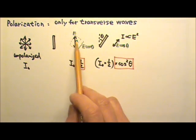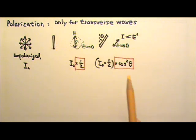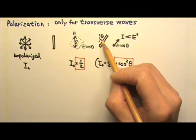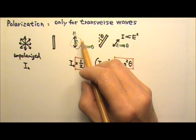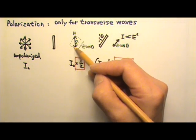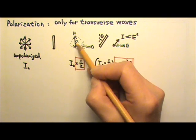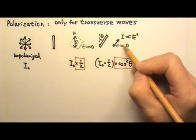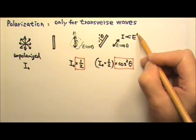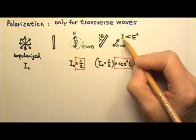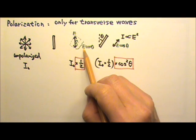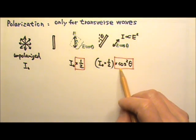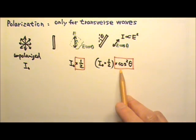The other half of the energy, in the perpendicular direction, does not pass through the polarizer. If we then make this polarized light go through a second polarizer at angle theta to the first, only the component of the electric field in that direction passes through, which is E times cosine theta. Because intensity is proportional to electric field squared — the electric field acts like amplitude — if the electric field changes by a factor of cosine theta, the intensity changes by a factor of cosine squared theta.